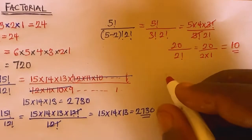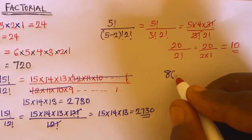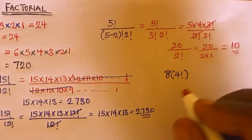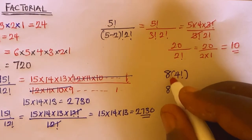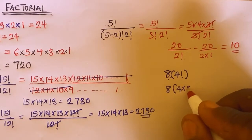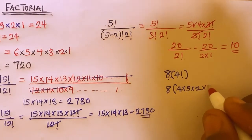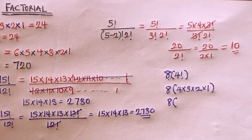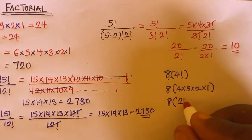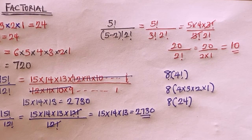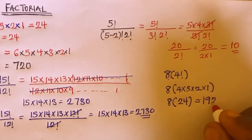Suppose you are asked to evaluate 8 multiplied by 4 factorial. Here, 8 is not a factorial — it is just a single integer. So you evaluate 4 factorial first: 4 multiplied by 3 multiplied by 2 multiplied by 1 equals 24. Then 8 multiplied by 24 gives 192.